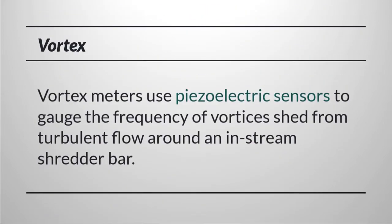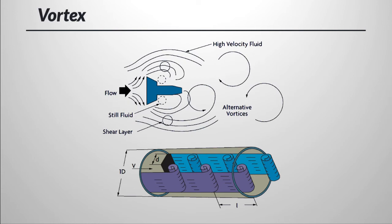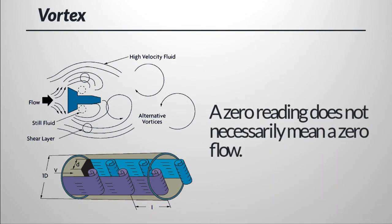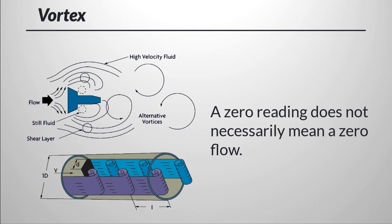Frequency-based technologies include vortex and turbine flow meters. Vortex meters use piezoelectric sensors to gauge the frequency of vortices shed from turbulent flow around an in-stream shedder bar. A piezoelectric sensor detects the pressure oscillation around the bar, or a piezoelectric strain gauge detects the forces exerted on the bar. The vortex shedding frequency is directly proportional to the velocity of the fluid in the pipe, and independent of fluid properties such as density, viscosity, and conductivity. The flow must be turbulent, so a zero reading on a vortex meter doesn't necessarily mean zero flow.